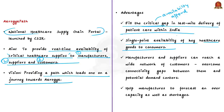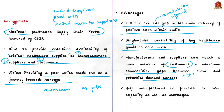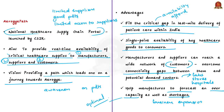Arogya Path will act as a single point of availability of important healthcare goods, helping customers tackle routine issues such as: dependence on limited suppliers, time-consuming processes to identify quality products, limited access to suppliers who can supply standardized products at reasonable prices within desired timelines, and lack of awareness about latest product launches. It will help manufacturers and suppliers reach a wide network of customers efficiently by overcoming gaps in connectivity between them and potential demand centers such as laboratories, medical stores, and hospitals. The portal will also create opportunities for business expansion and help manufacturers forecast over-capacity or shortages to reduce wastage and maintain optimal supply levels.